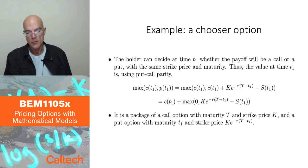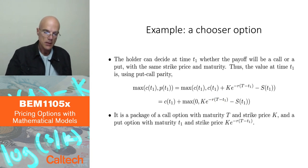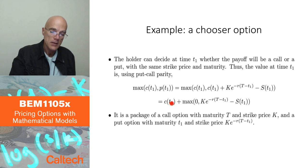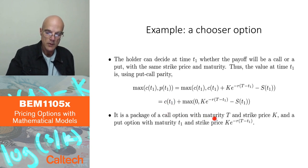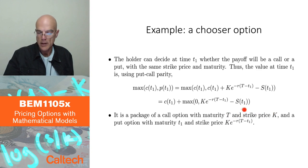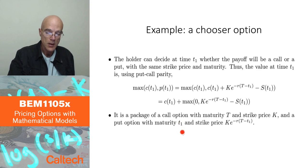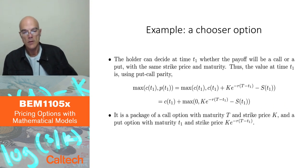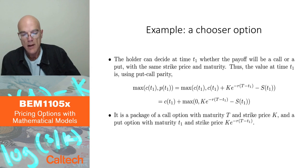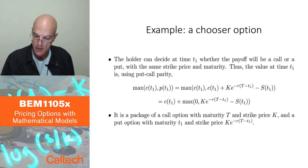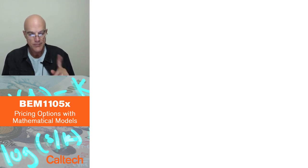Therefore, at any time before T1, the price of the chooser option is the sum of: the price of a call option with maturity capital T and strike price K, plus the price of a put option with maturity T1 and strike price K·e^(−r·(T−T1)). It was not hard — just using put-call parity to price this chooser option. And that's it for this set of slides.